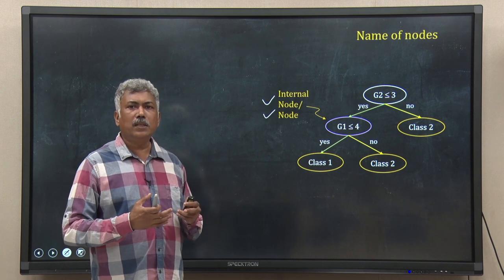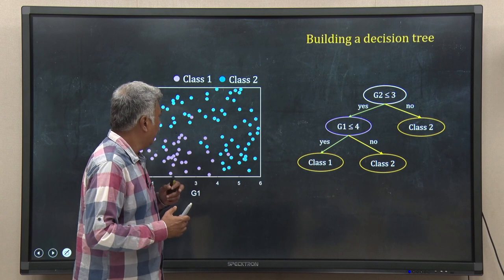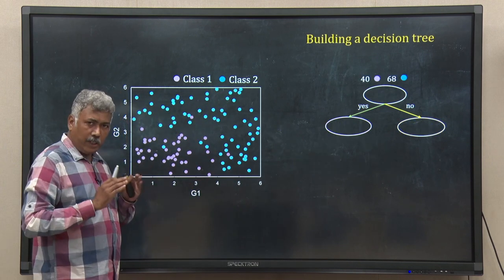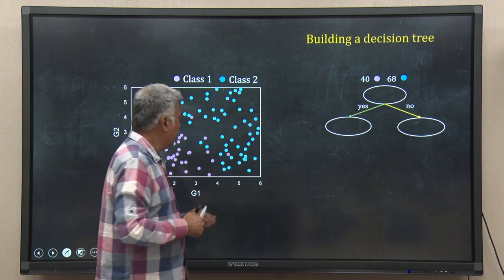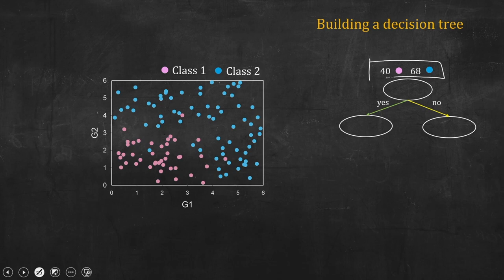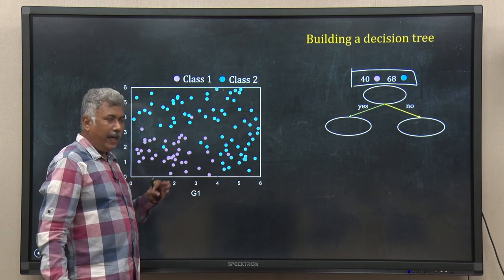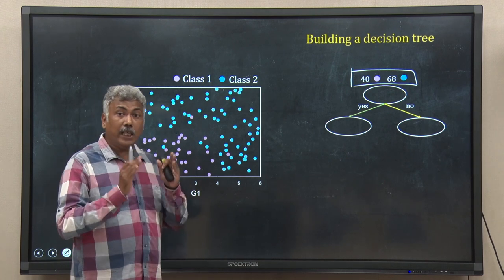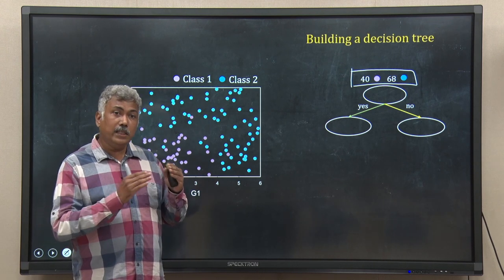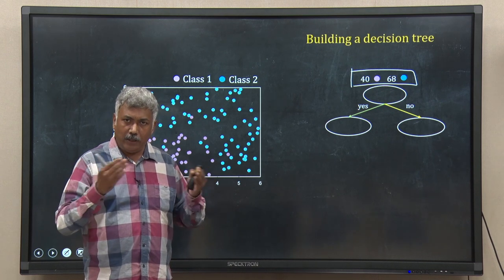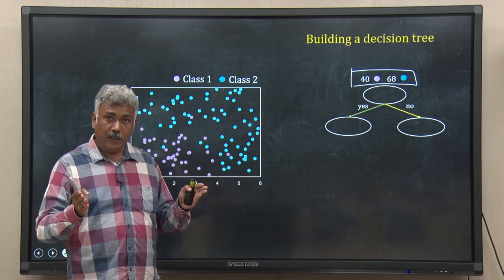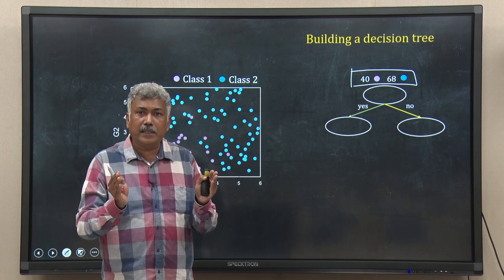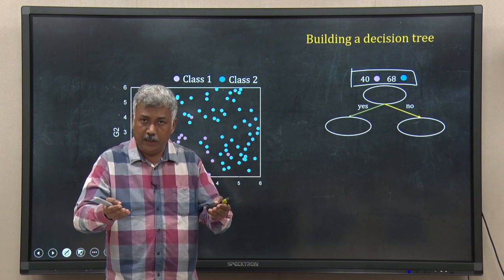Now let us look into how this decision tree classifier is built using a training data set. The first step: take all your data initially in the root node. My initial training data has 40 data points of class 1 (pink) and 68 data points of class 2. I have to ask a question — like is G1 equal to 1, or is G1 bigger than 3 — a logical operation with a yes/no answer. I ask the question in such a way that from a heterogeneous population, by giving yes/no answers, I get more homogeneous subsets of data.